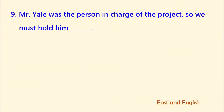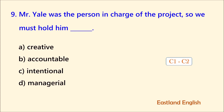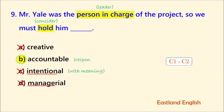Here's number nine. Mr. Yale was the person in charge of the project, so we must hold him blank. A. Creative. B. Accountable. C. Intentional. D. Managerial. Person in charge is the term we use for leader, or the person responsible for something. In this context, hold equals consider. The solution relies on which of these adjectives collocates with hold. Intentional does not collocate with hold, neither does creative. Although managerial does fit according to the context and meaning, unfortunately we don't use it in collocation with hold. The best answer is accountable, which is similar to responsible. Mr. Yale was the person in charge of the project, so we must hold him accountable.